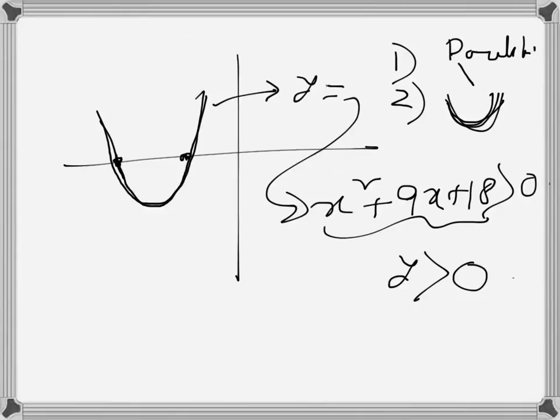So the region will be - this is (-6, 0) and this is (-3, 0). So where in this graph is y greater than 0? If I look at this one, up to here, up to here, in this part...